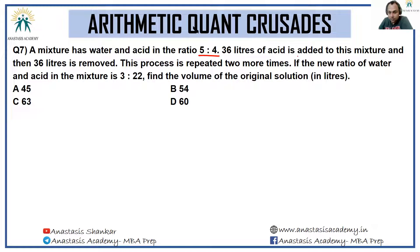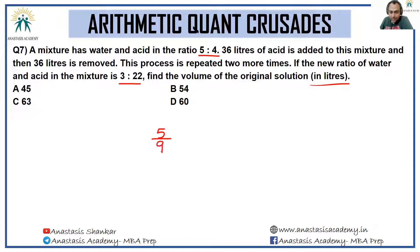A mixture has water and acid in the ratio 5:34. 36 liters of acid is added to the mixture, then 36 liters of the mixture is removed. This process is repeated two more times. Since acid is added in quantity but removed in proportion, focus only on water. Initially water is 5/9 of total. Each cycle, the proportion of water multiplies by v/(v+36), where v is the original volume.